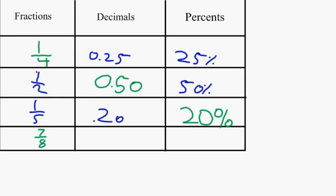The last one is tricky. Seven-eighths in a decimal is when you divide eight into seven. You get zero point eight seven five. That is your decimal.